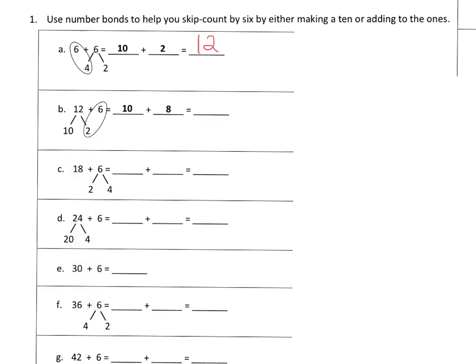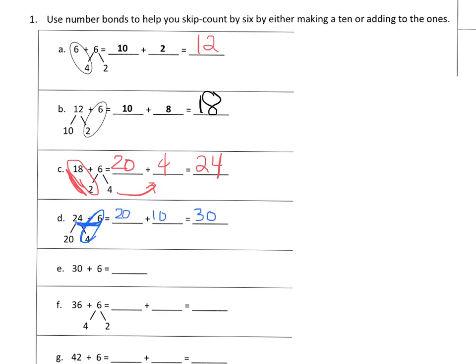We've got eighteen, and we want to bump it up to the next multiple of ten, which is twenty. We decompose the six to two plus four: eighteen plus two gives us twenty, plus the four extra gives us twenty-four. Now we have twenty-four, and to bump it up to the next multiple of ten we need six — so four plus six is ten. We have twenty plus ten which gives us thirty.